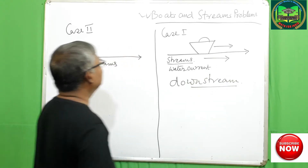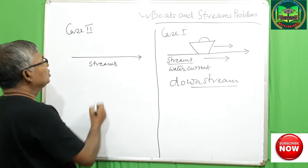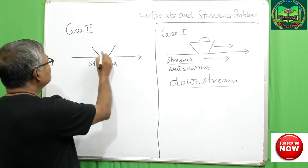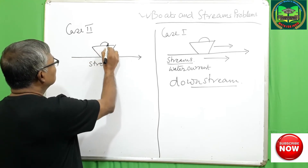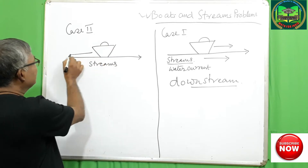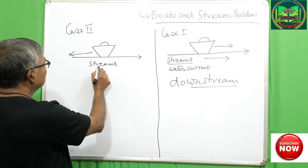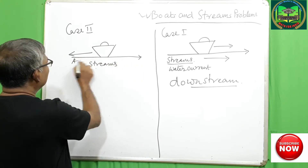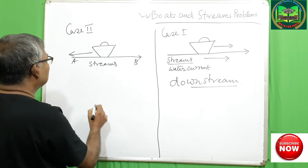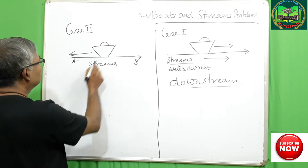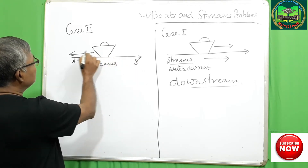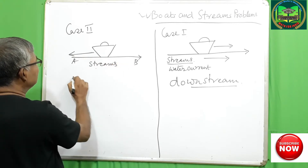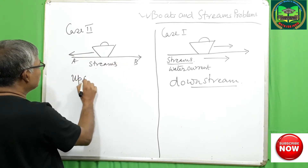But in case 2, whenever a boat is traveling, the direction of the stream is A to B, but the direction of the boat is B to A direction. This is called upstream.